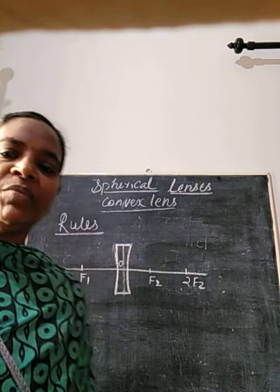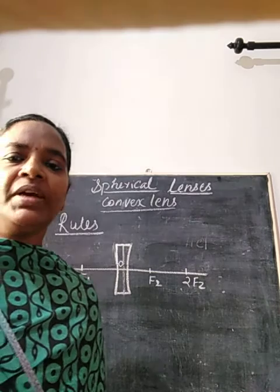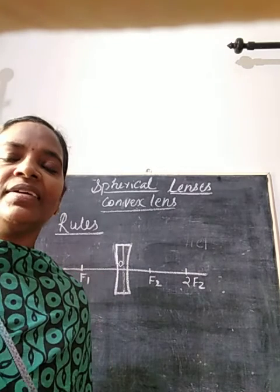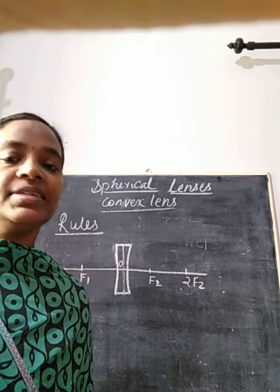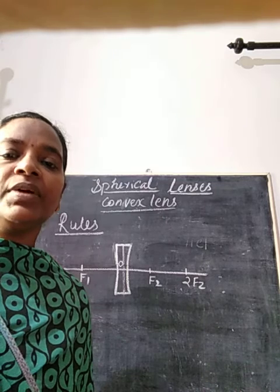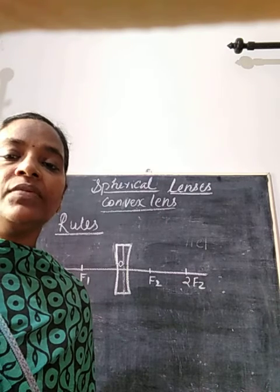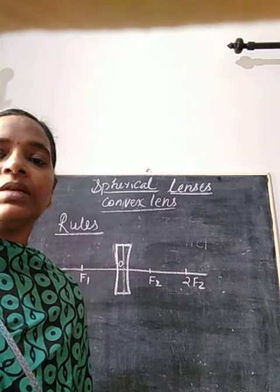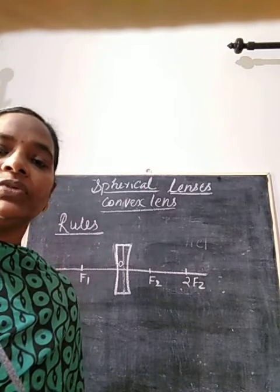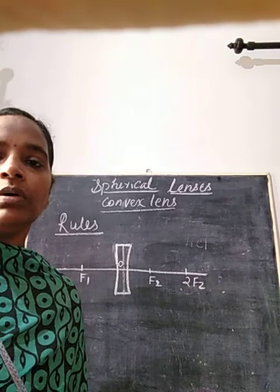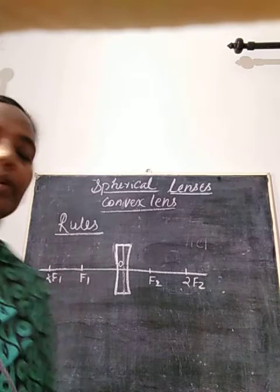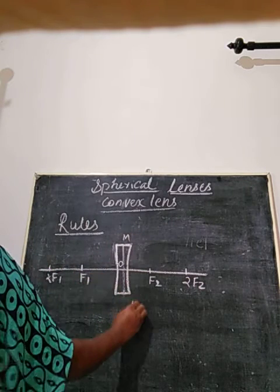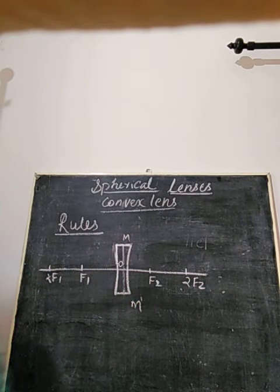Now we discuss the rules of image formation by a concave lens. Here we have a ray diagram showing the concave lens with important terms: optical center, f1, f2, 2f1, and 2f2. MM dash is the aperture of this particular concave lens.